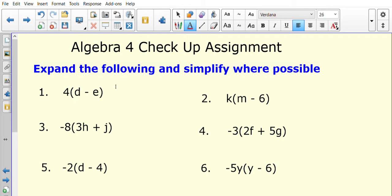So question number one, you have to multiply this bracket d minus e by 4. So remember, whatever's on the outside of the bracket must multiply everything within the bracket. So this is the same as 4 times d, which is 4d, and 4 times negative e, which is negative 4e.